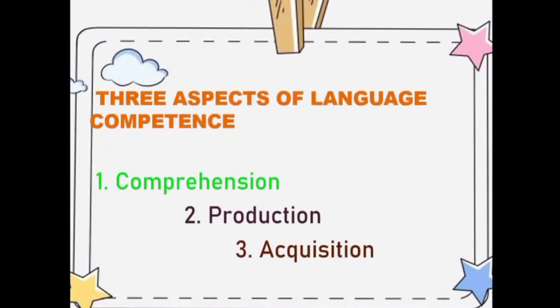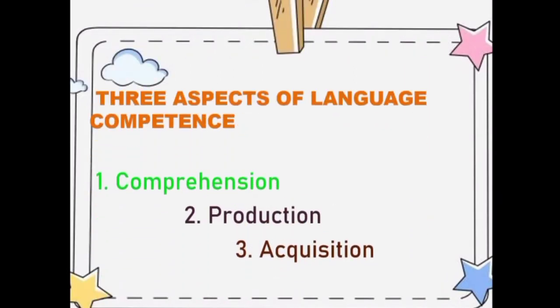There are three aspects of language competence: the first is comprehension, the second is production, and the third is acquisition.